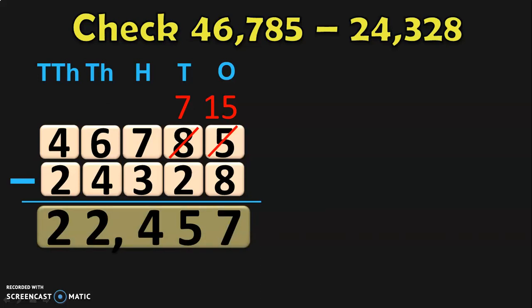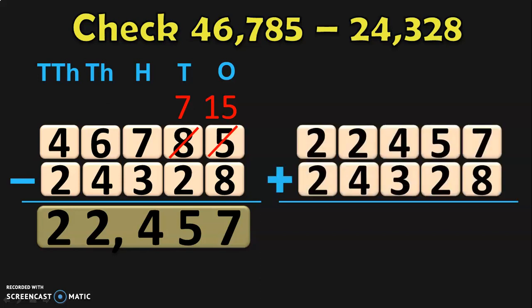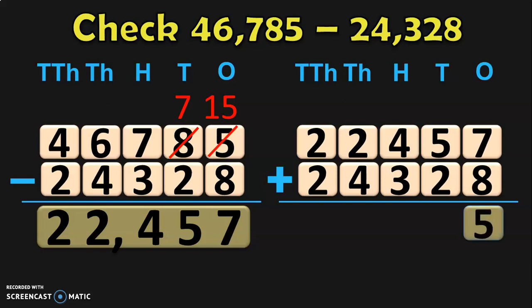Now our task is to check if the answer that we have got is correct. We know from the rules we have to add the answer 22,457 plus the smaller number, which is 24,328. When you add them, you will get the bigger number 46,785. If you get 46,785 you can be assured that the subtraction that you have done is correct. Write down the place values and begin the addition from the ones place. In ones place we have 7 plus 8, which gives you 15. So retain the 5 in the ones place and take the 1 as a carry over to the tens place.